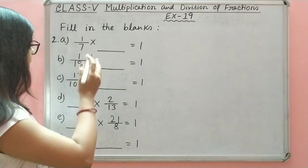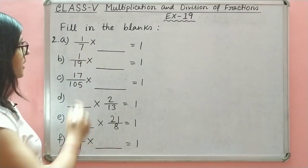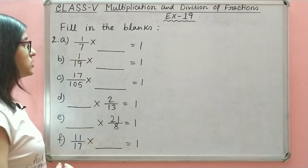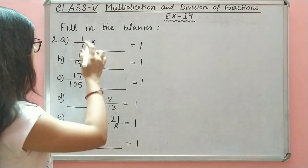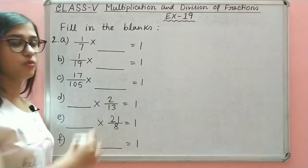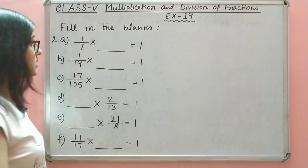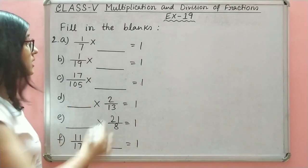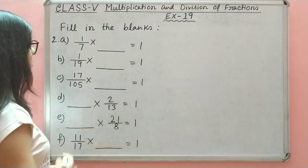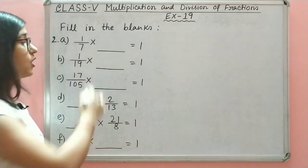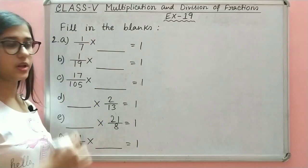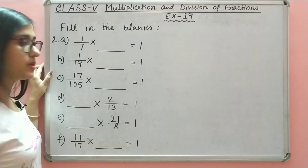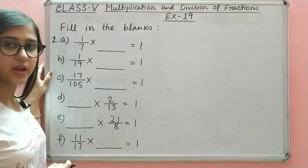Question 2. First, 1 upon 7 into dash is equal to 1. The multiplicative inverse of 1 upon 7, when multiplied, gives 1. The multiplicative inverse of 1 upon 7 — what is in the denominator goes to the numerator, and what is in the numerator goes to the denominator. So the multiplicative inverse of 1 upon 7 becomes 7 upon 1.